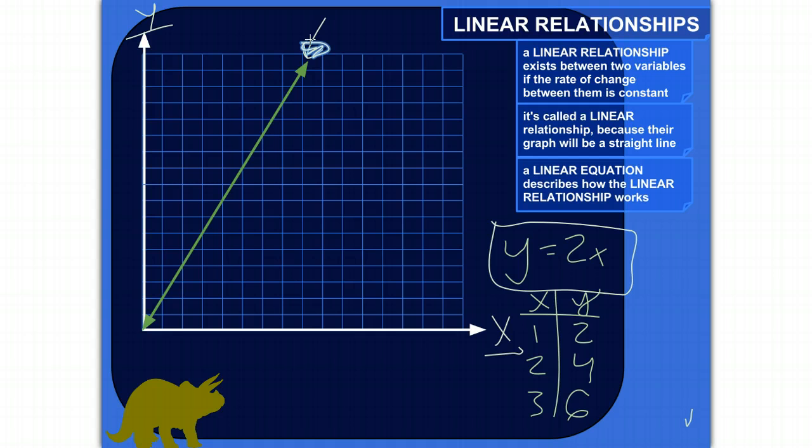And the way you can tell it's a linear relationship is, one, if you graph it and it's a line, then there's a linear relationship there. But you can also see if the rate of change is constant.